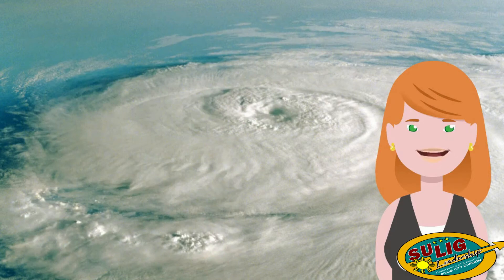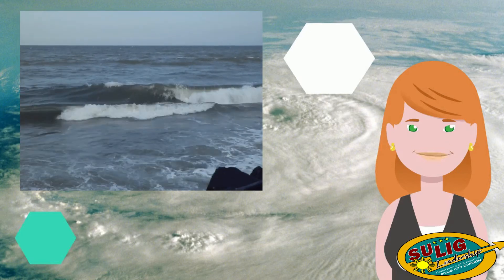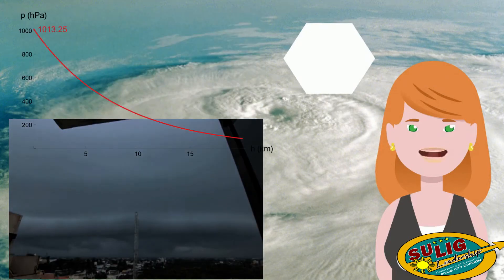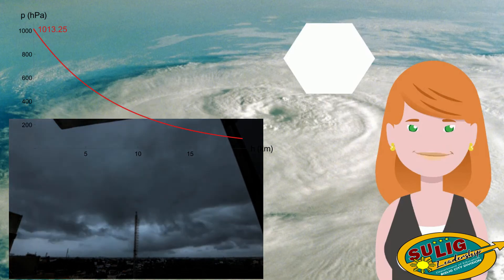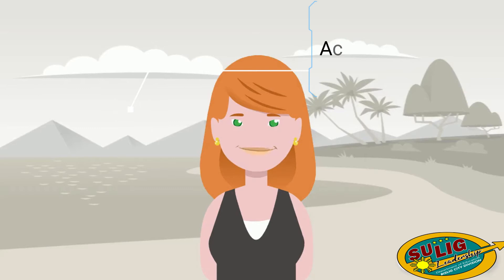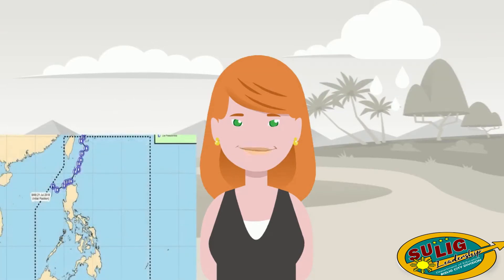It is important to track typhoons' paths accurately because it will help us save lives. We will know that a typhoon is coming through the following weather conditions: increasing wave height and frequency, increasing cloudiness, falling air pressure, and heavier rainfall. Kindly refer to Activity 3 on page 11 of your module. Now let's examine a typhoon.